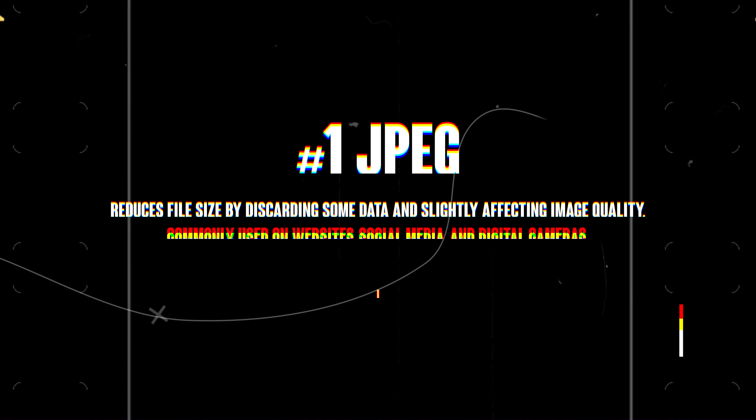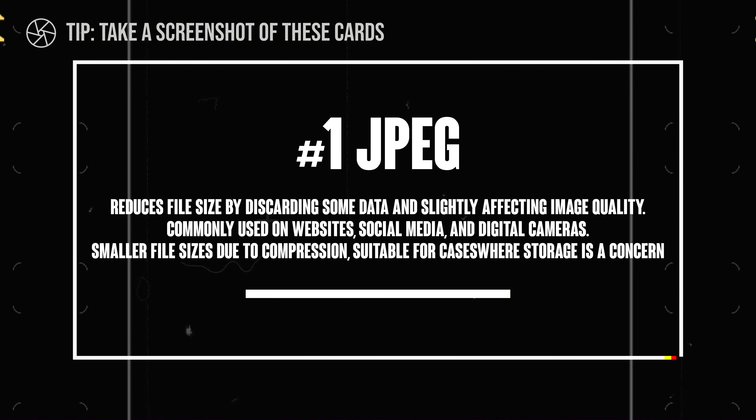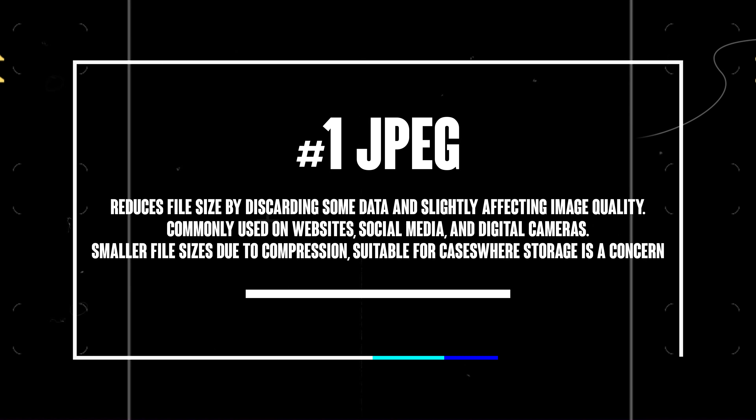First up we have JPEG, or Joint Photographic Experts Group. JPEG is probably the most popular image format out there. It's known for its lossy compression, which means that it reduces file size by discarding some data. This can slightly affect image quality but it allows for smaller file sizes.